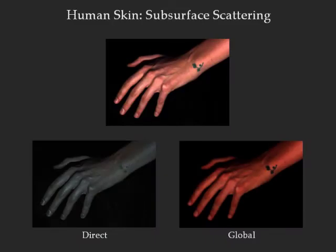Here we see results for a hand with a green tattoo. The direct image mainly includes the surface reflection due to oils and lipids on the skin, while the global image captures the subsurface scattering and the tone of the skin. Notice that the green tattoo appears in the direct image and is very dark in the global image, indicating that the pigments of the tattoo ink are more opaque than the tissues of the skin.